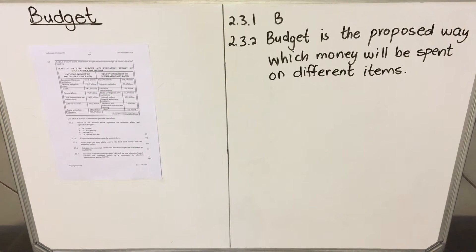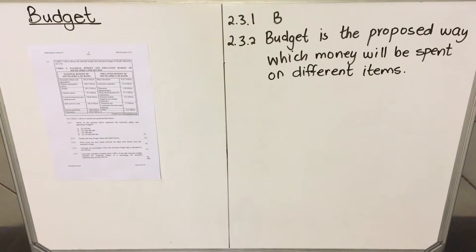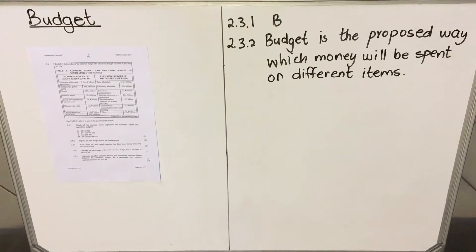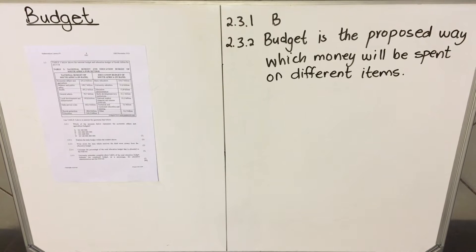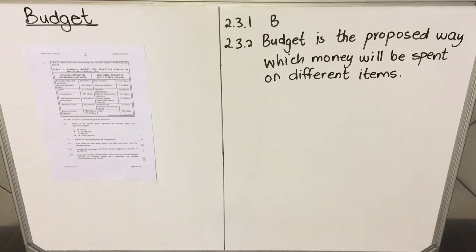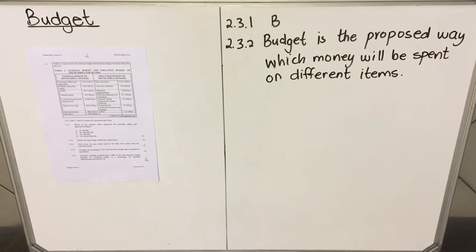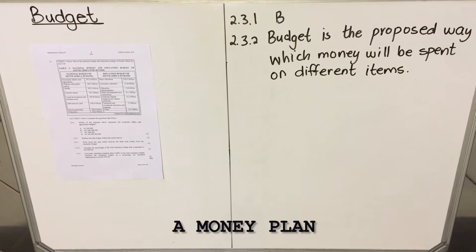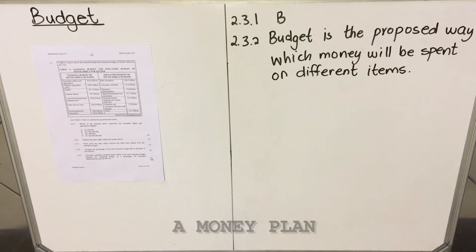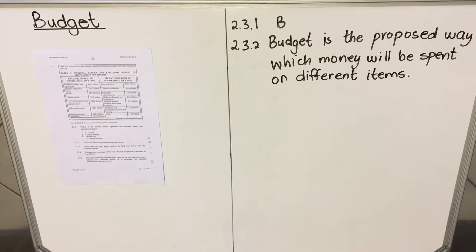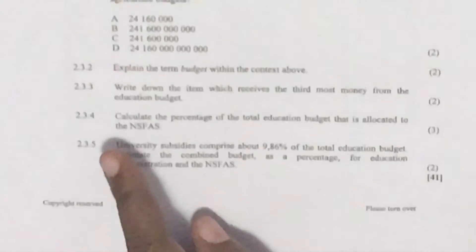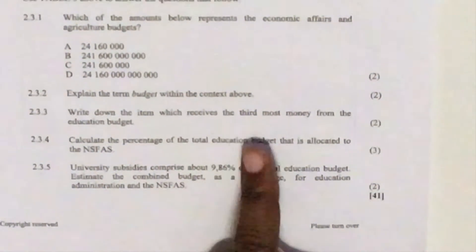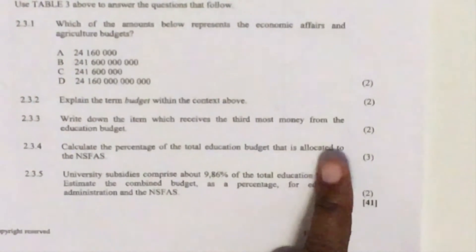Let's go to question 2.3.2. The question says: explain the term 'budget' within the context above. A budget is the proposed way in which money will be spent on different items. A budget is a plan for how you will use your money — it's not that you have already spent it, it's the plan that you have.